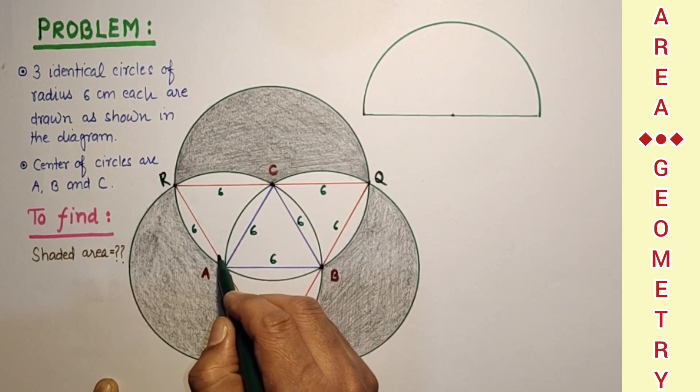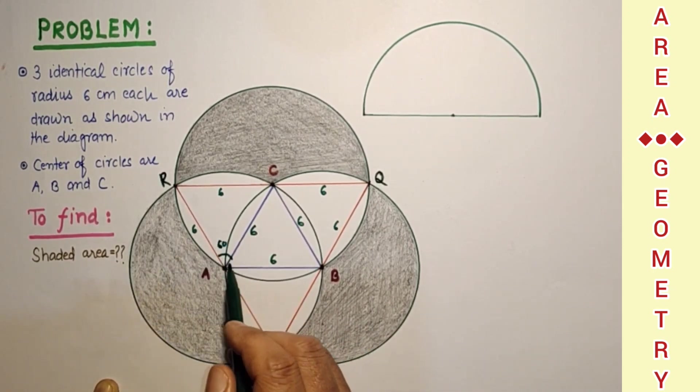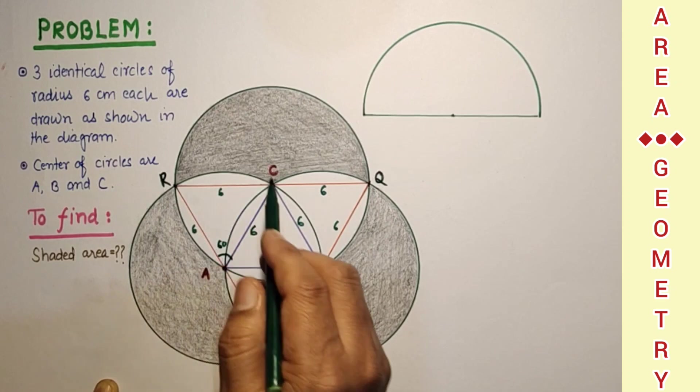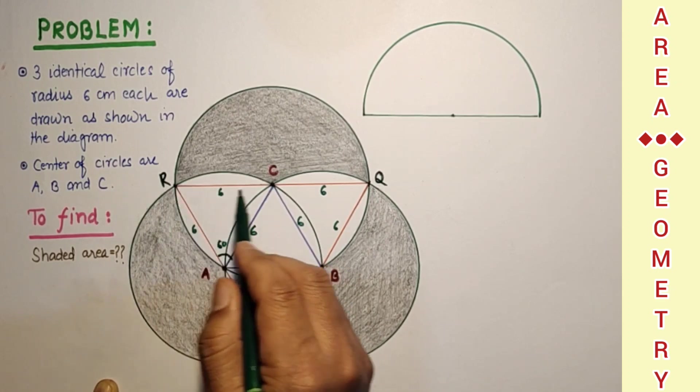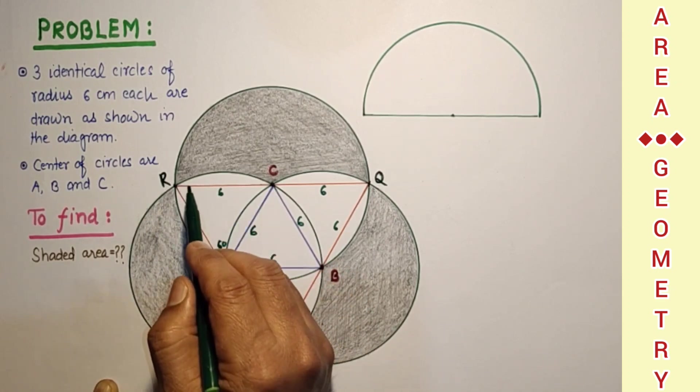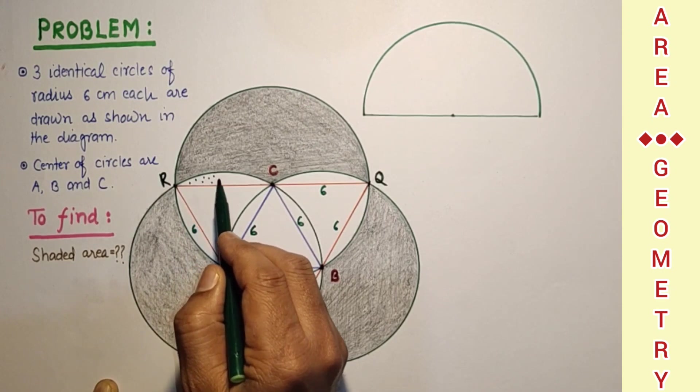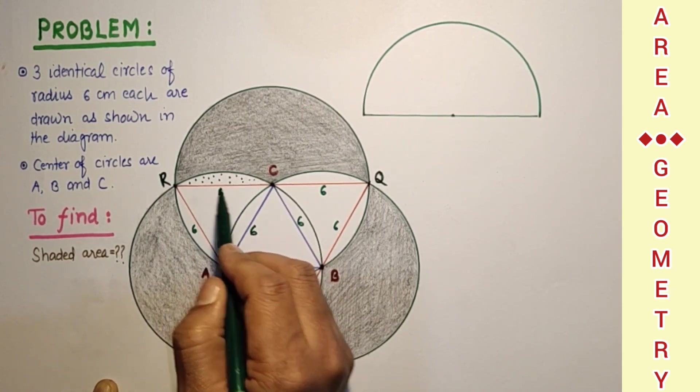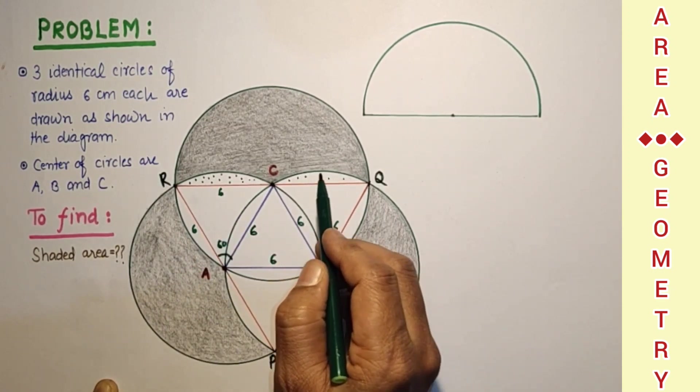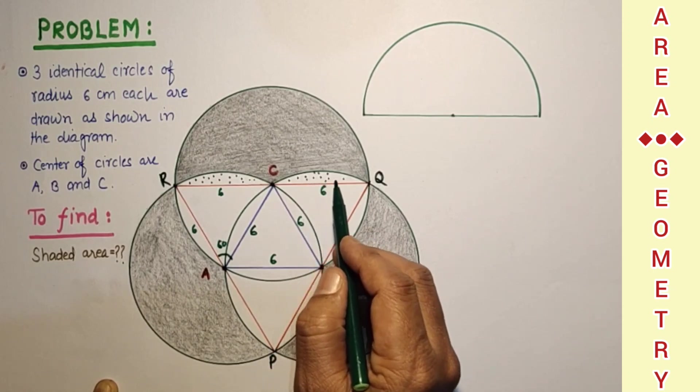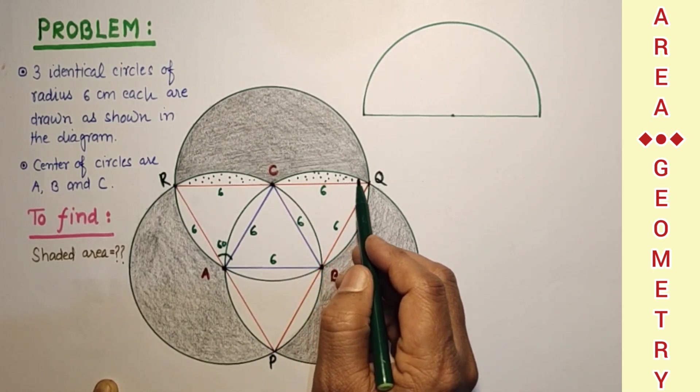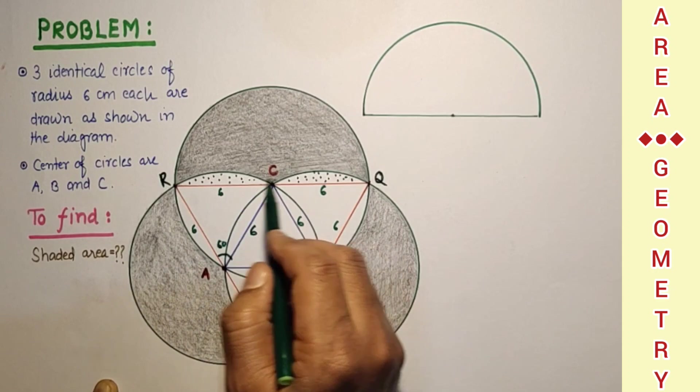This is 60 degree. If we find this sector's area and subtract this triangle's area, we will get this segment. And these two segments are equal. So if we find one segment's area and double it, we will get sum of these two.